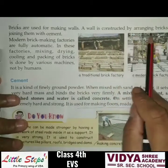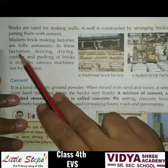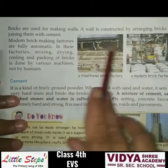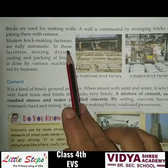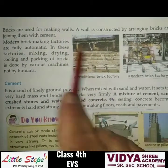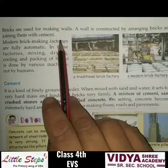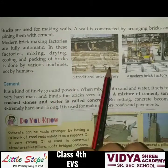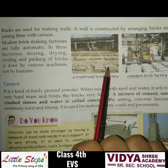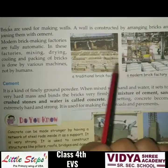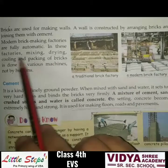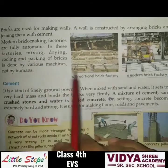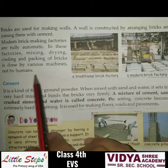A wall is constructed by arranging bricks and joining them with cement. The modern brick-making factories are fully automatic. In these factories, mixing, drying, cooling, and packing of the bricks is done by various machines, not by humans.